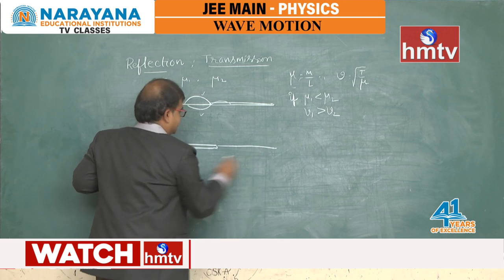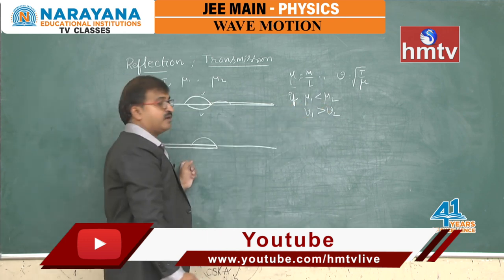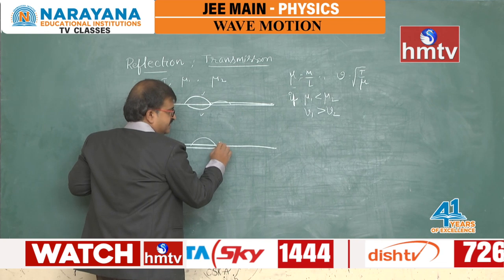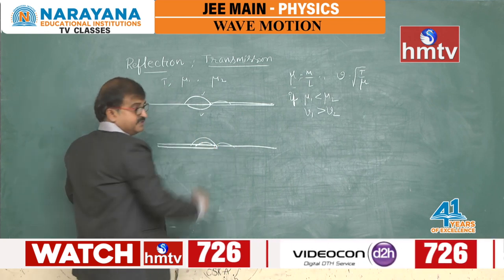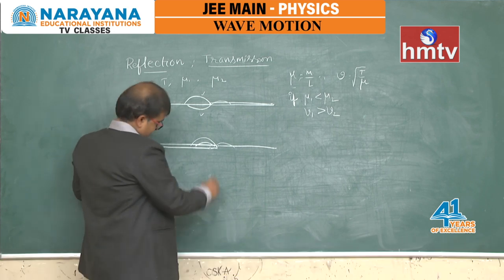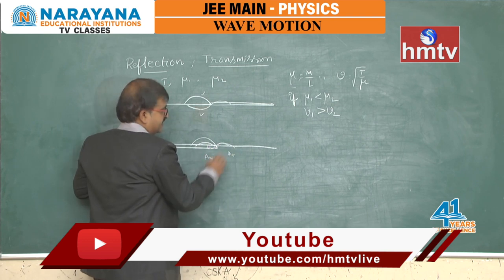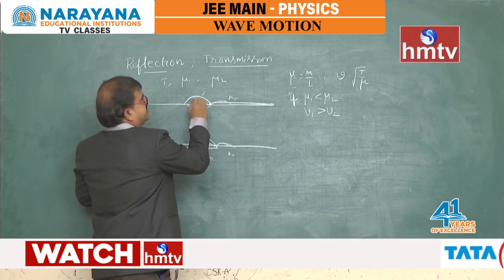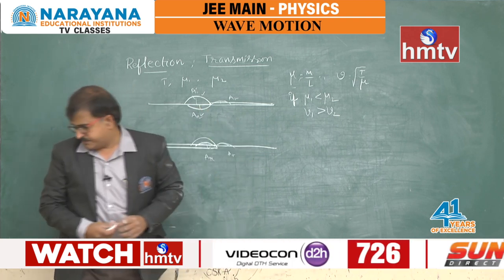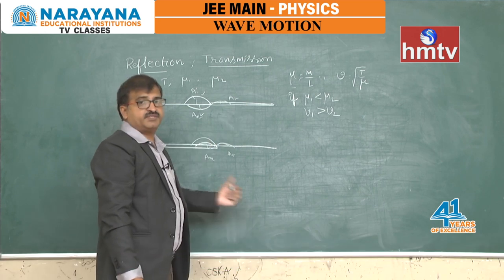Conversely, when the wave travels from the thick string (denser) to the thin string (rarer), there is also a transmitted wave and a reflected wave. In this case, the reflected wave is in phase — no phase change occurs. The energy splits into a transmitted amplitude At and a reflected amplitude Ar from the incident amplitude Ai.